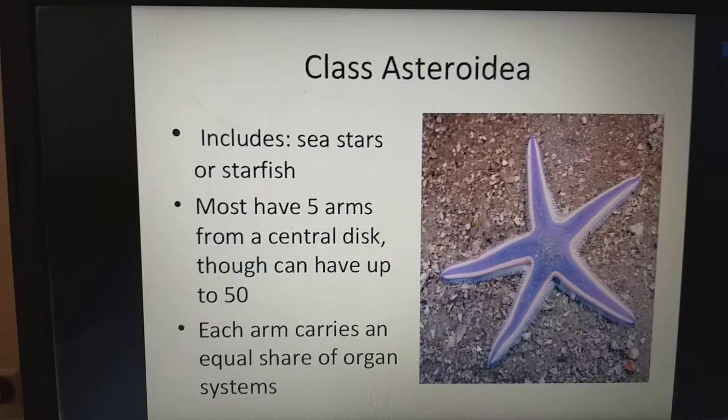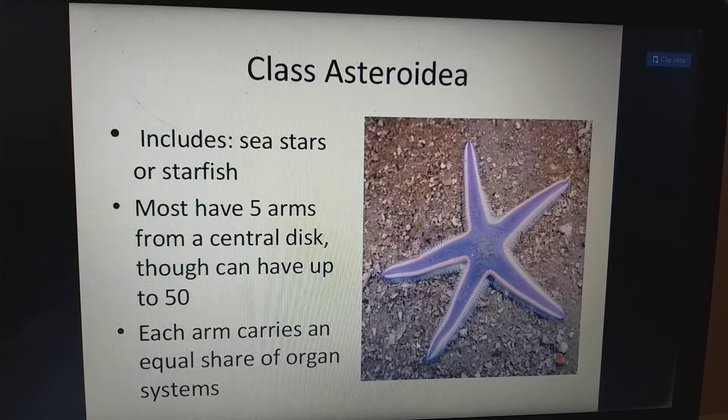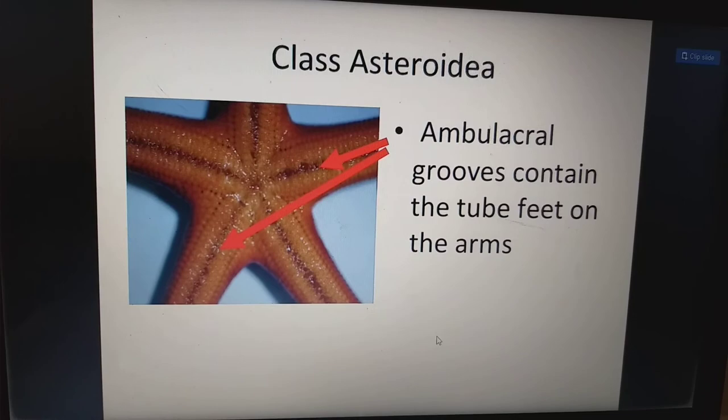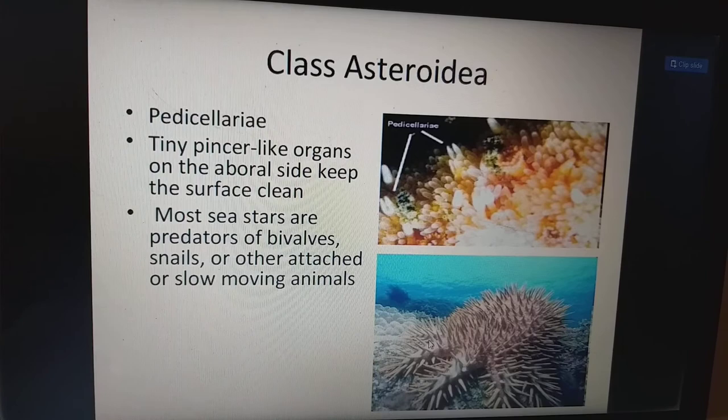Class Asteroidea includes sea stars or starfishes. Most have five arms from the central disc and can have up to 50. Each arm carries an equal share of organ systems. Ambulacral grooves contain the tube feet on the arms. Pedicellariae — tiny pincer-like organs on the aboral side — keep the surface clean. Most sea stars are predators of bivalves, snails, and other attached or slowly moving animals.